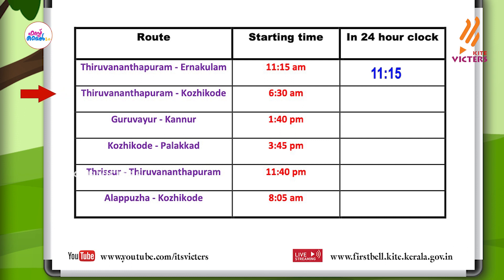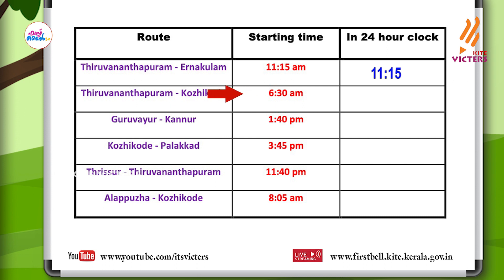Look at the second one: Thiruvananthapuram–Kozhikode. The starting time is six thirty AM. It is also AM, that means before twelve noon. So six thirty AM in twenty-four hour clock, we can write as six thirty itself.